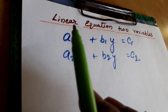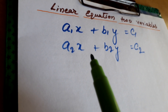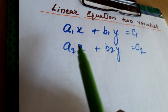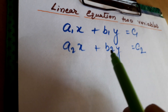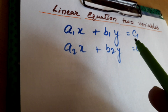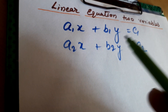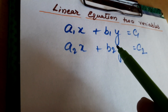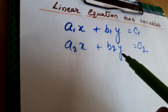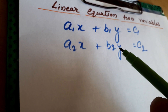We are studying the chapter linear equations in two variables. We have one equation a1x plus b1y equal to c1, and a2x plus b2y equal to c2. We will see how we can determine whether the graph of these two equations will be parallel, intersecting, or coincident, and whether they will have a unique solution, many solutions, or no solution.